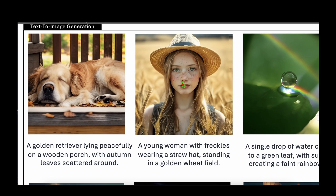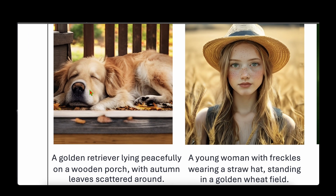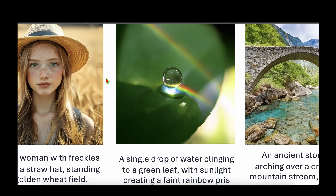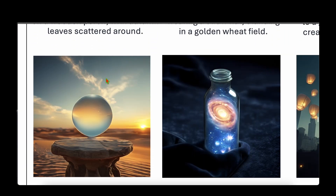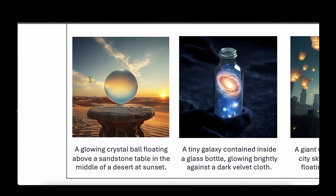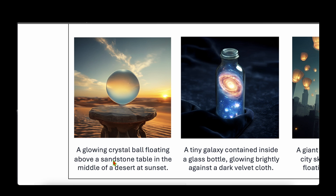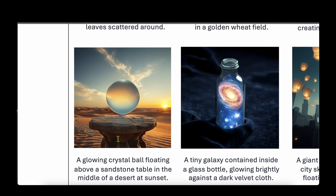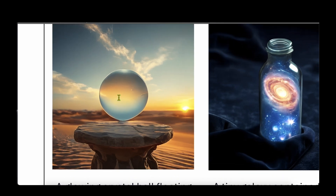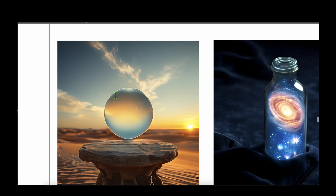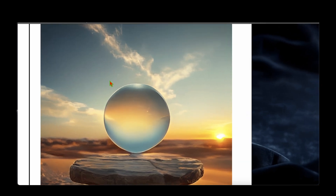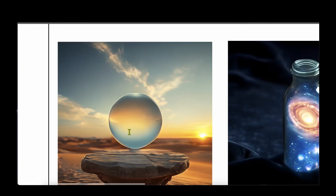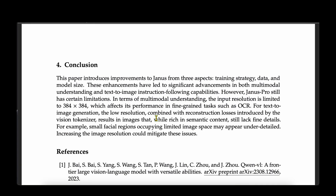For image generation, the human face and dog generation results look quite realistic. One slightly unrealistic example is the prompt 'a glowing crystal ball floating above a sandstone table in the middle of a desert at sunset' — the outline demarcating the sky and the crystal ball is quite distinct, making it look unrealistic. But overall, the model has done a pretty good job at generation.